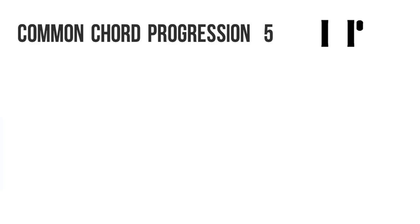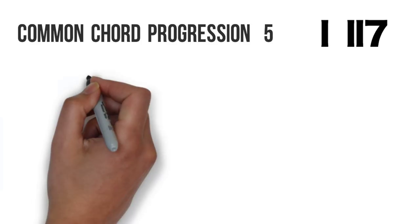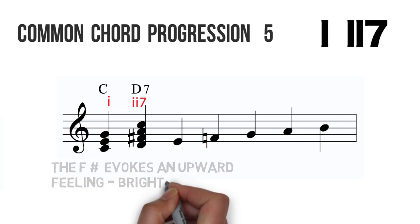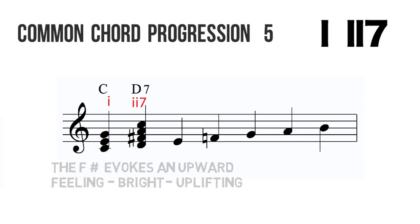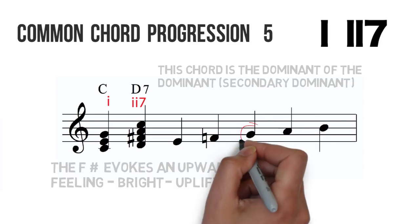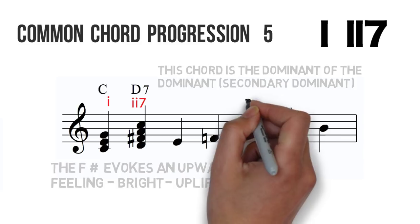The last progression in this first part is called One to Two Seven. In the key of C, this is C to D seven, so F-sharp is introduced into the mix — an uplifting feeling. The two seven is actually a secondary dominant: D seven is the dominant of G seven, which is the dominant of C.